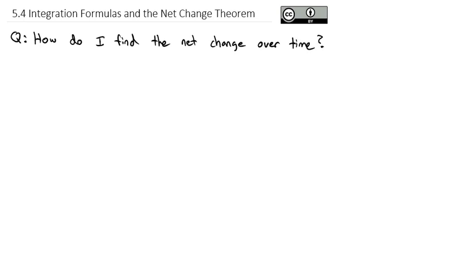Calculus is the study of change. And with derivatives, we talked about the rate of change. But if this thing is changing at some rate that we can calculate, we should be able to figure out how much change happens over time. And there's actually a relationship between the rate of change and the net change.